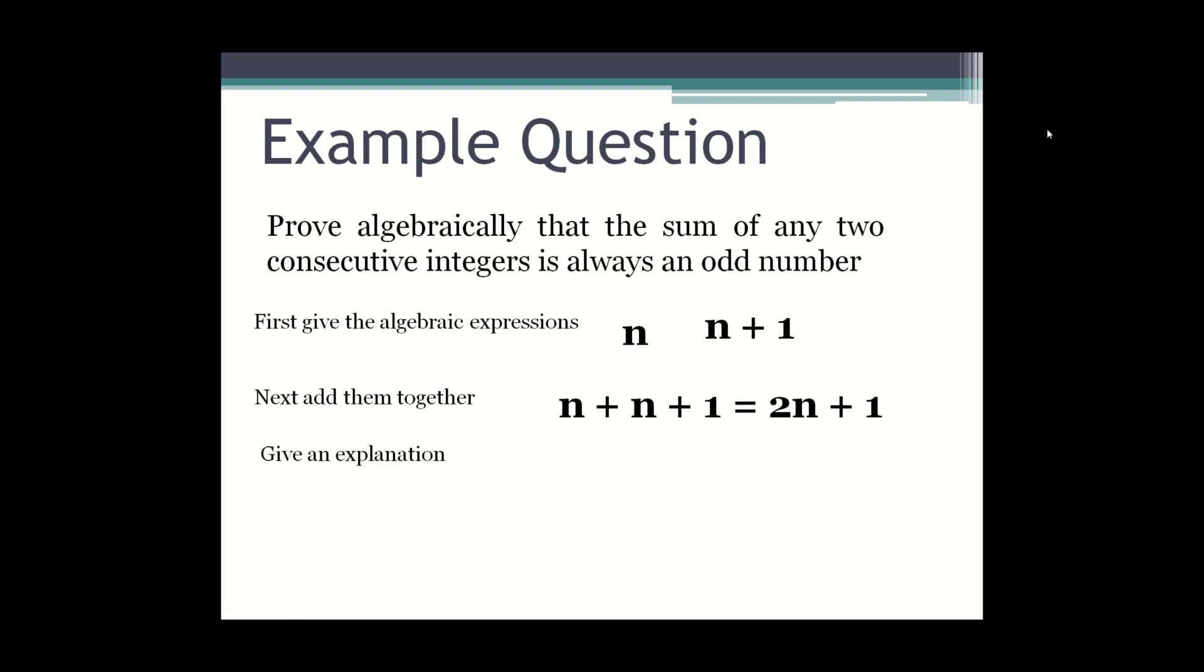And then with proof you always have to give an explanation which is the sum of two consecutive integers is always odd because even plus 1 is odd.